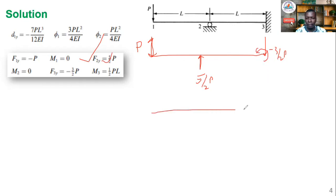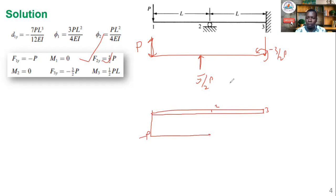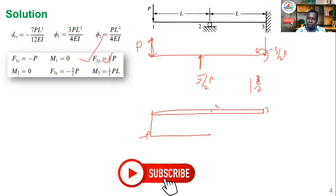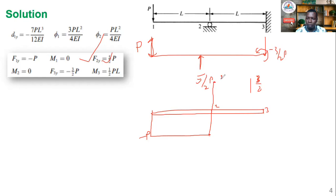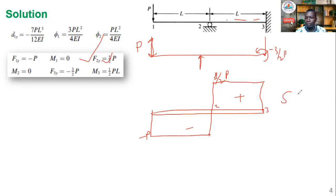For the shear force diagram we start at node one. There is no UDL applied, so the shear is constant. Starting at node one with negative P and remaining constant, at node two a reaction of five-over-two P is applied upward. Negative P plus five-over-two P gives positive three-over-two P, which remains constant until node three where a reaction of negative three-over-two P is applied, bringing the shear back to zero. Key values: minus P to the left of node two, plus three-over-two P to the right.